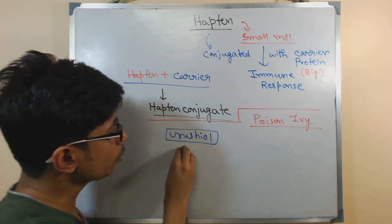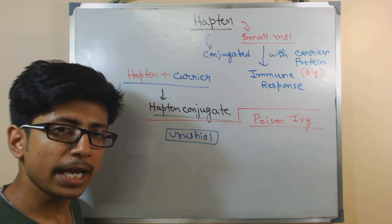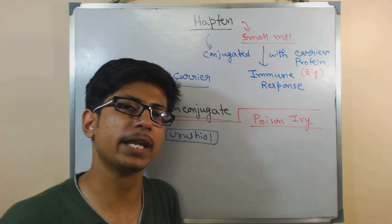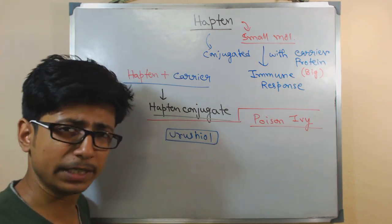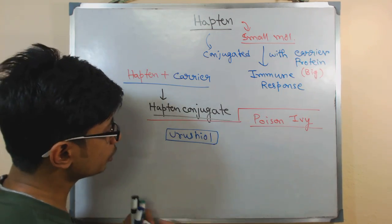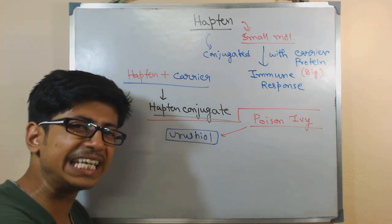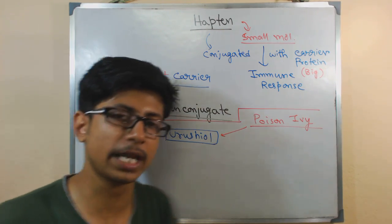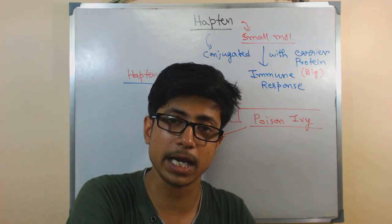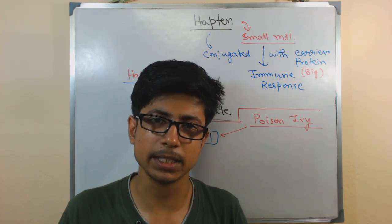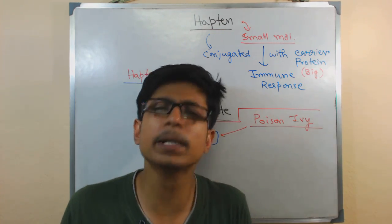Now urushiol is that molecule that is present in poison ivy, in the leaf of poison ivy and also in the extract of poison ivy leaf and the tree. Once the poison ivy is in touch with your skin cells, if you have any direct touch with poison ivy tree, overnight you have a kind of sensation, a kind of itchiness slightly, but not much.